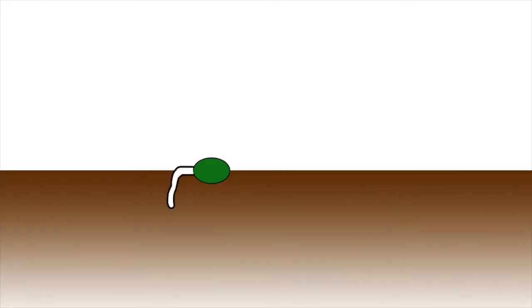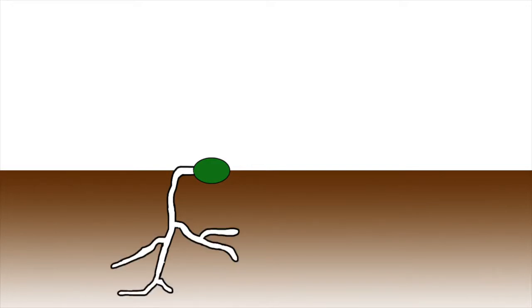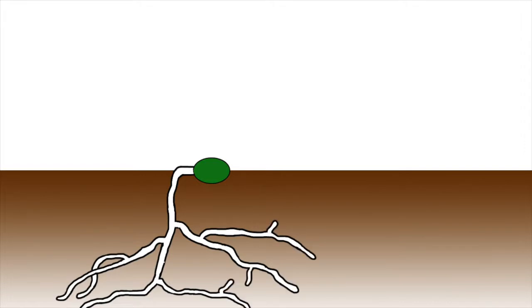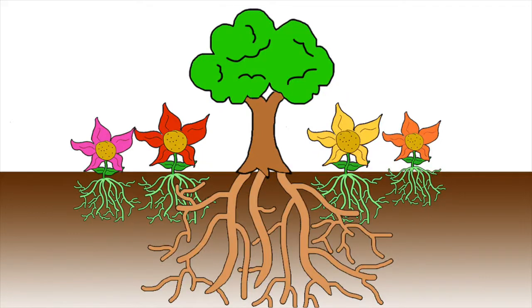The classical Streptomyces life cycle starts with a spore that germinates and grows through hyphal-tip extension and branching, forming a network of cells that penetrate into their growth substrate. This vegetative growth essentially anchors the Streptomyces colony in place, much like a plant root system.